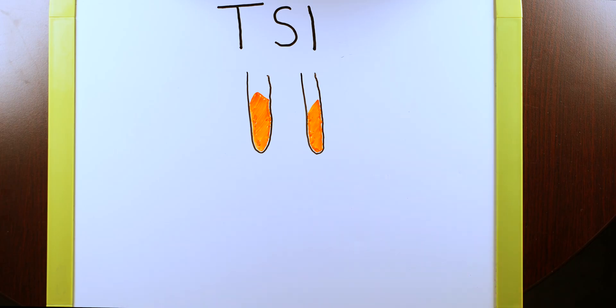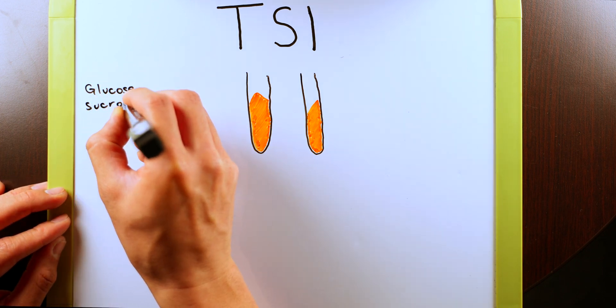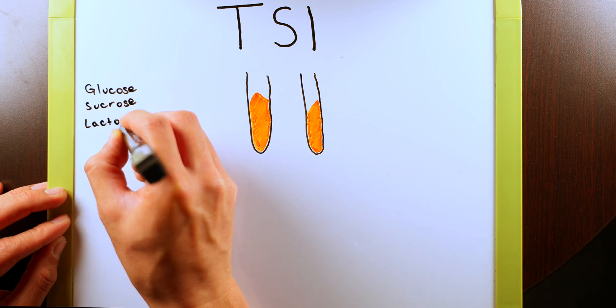Your TSI lab stands for triple sugar iron agar. The three sugars in this agar are going to be glucose, sucrose, and lactose.